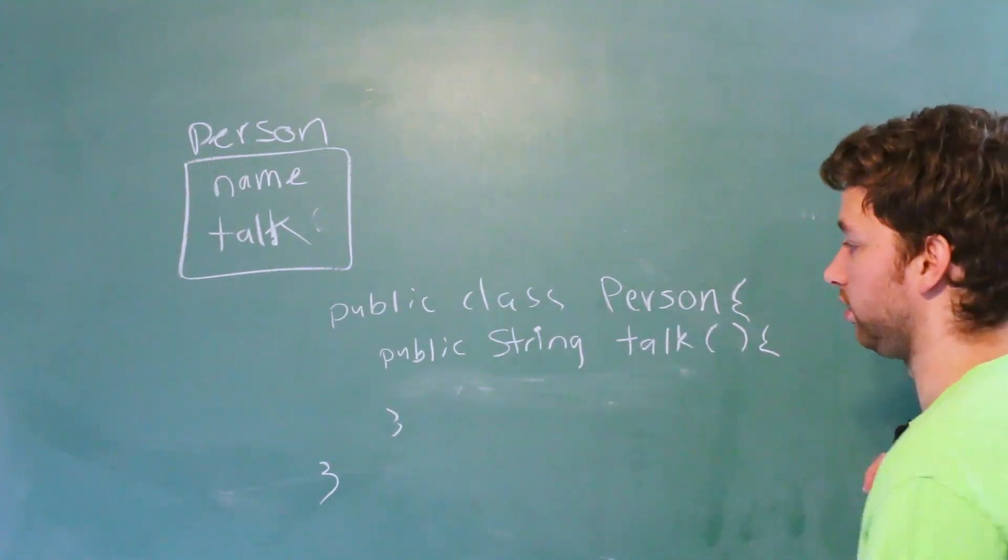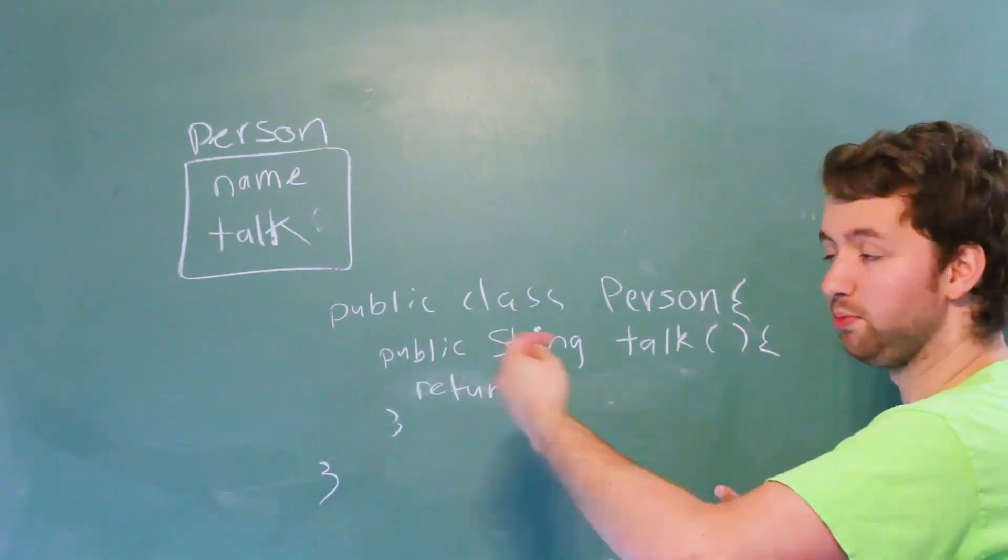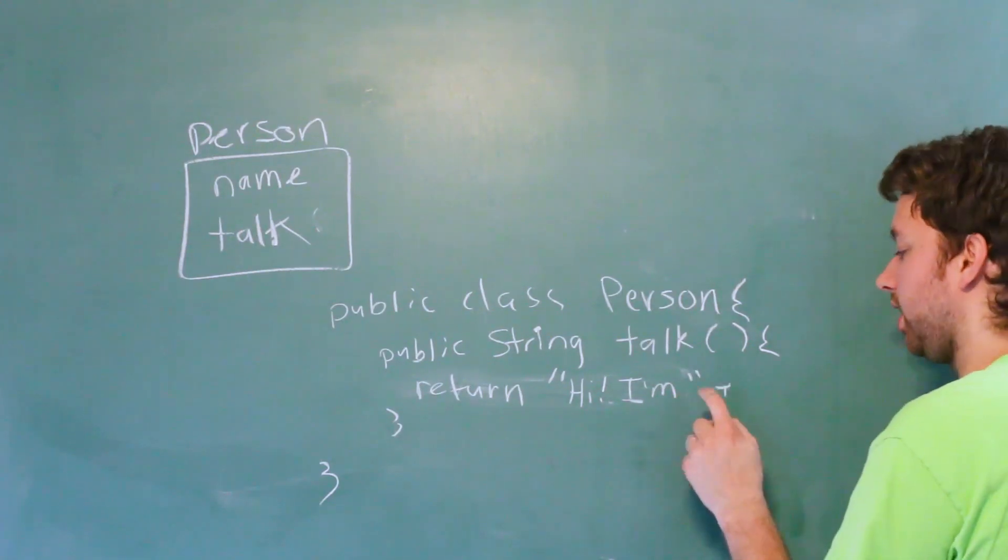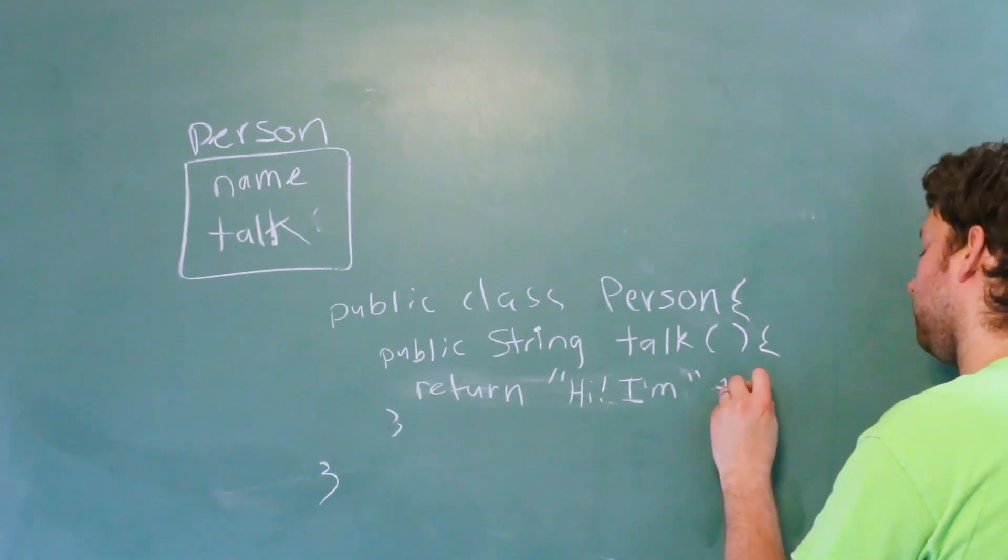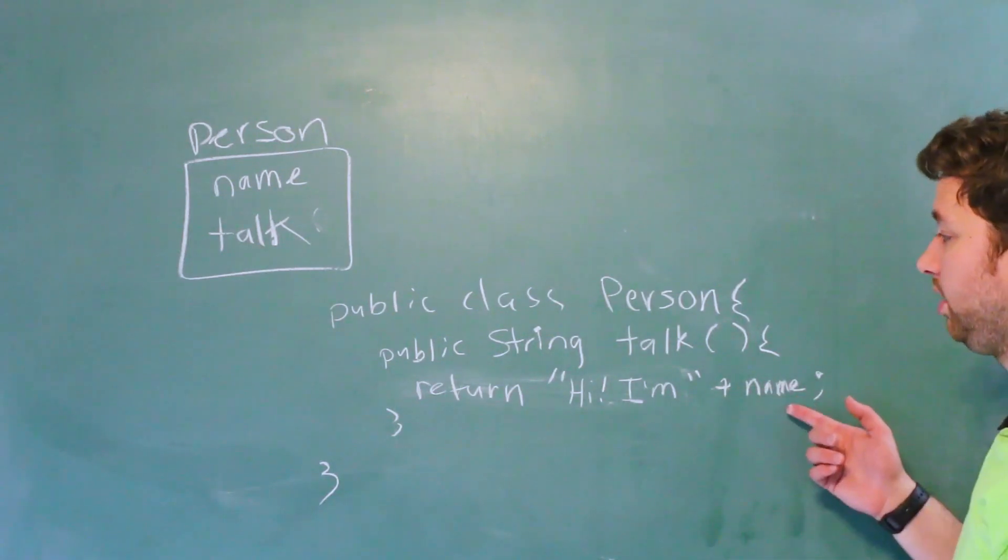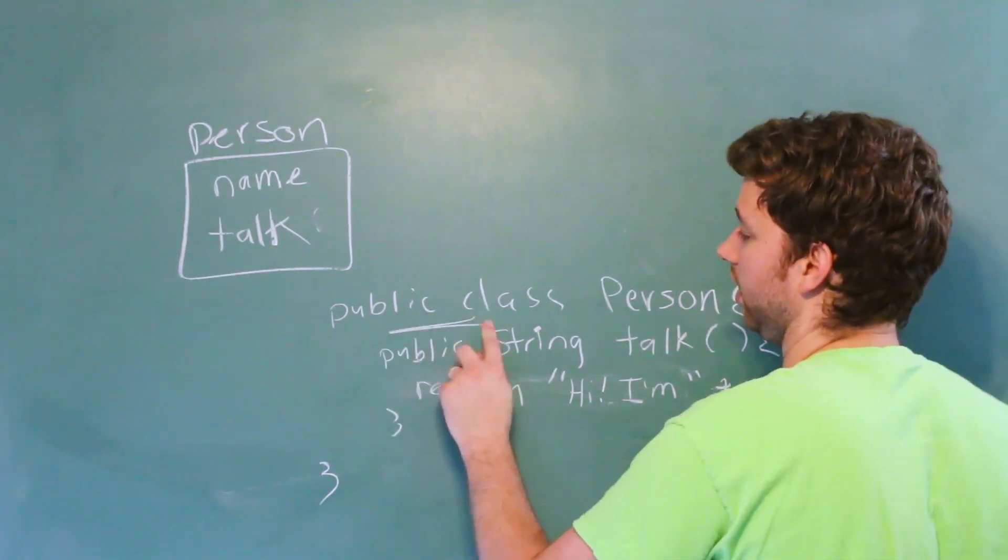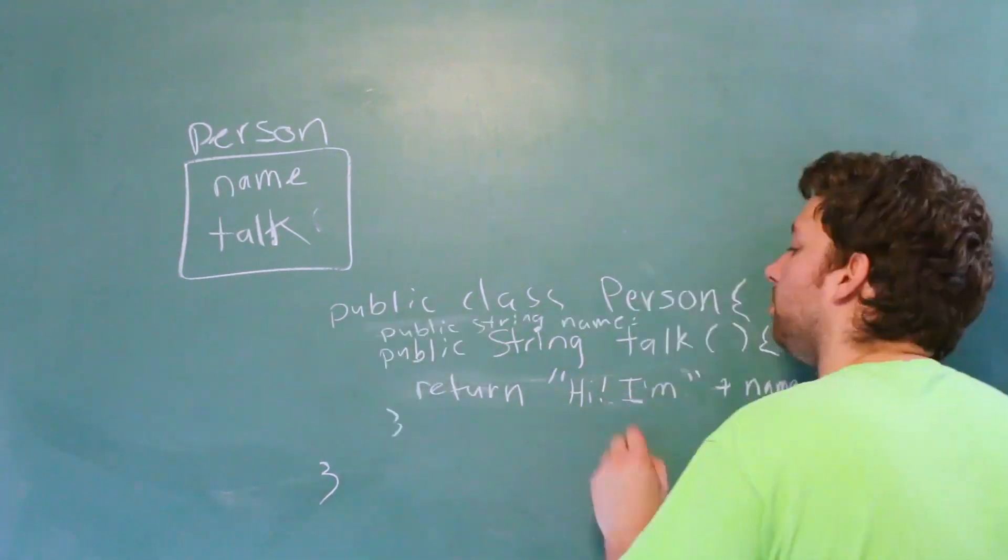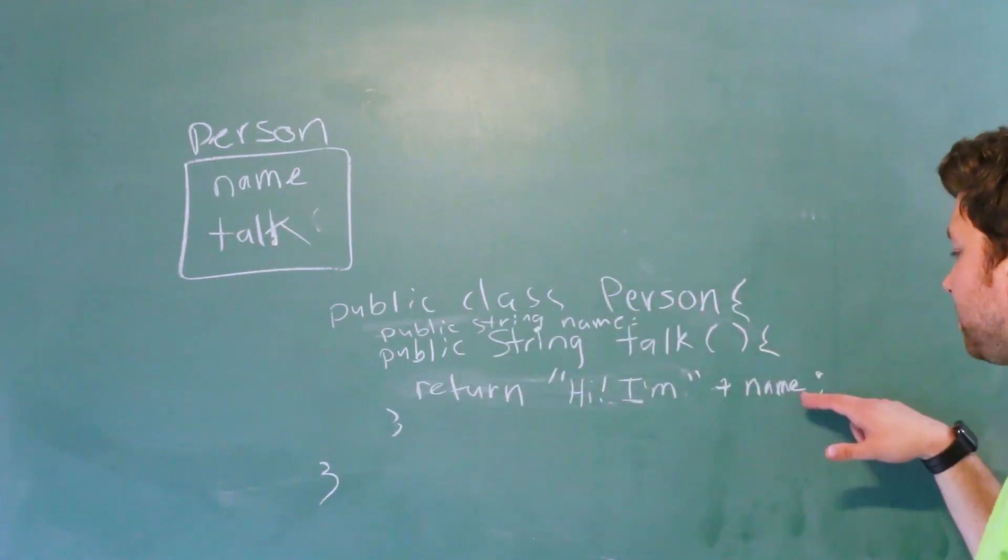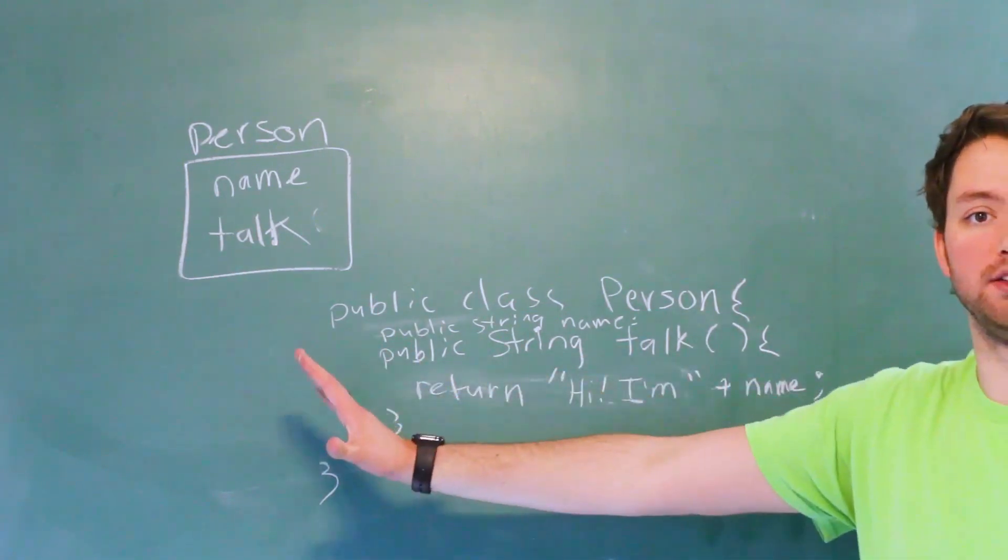So this might look like this. We can say return to basically give that string as an output. So we can say hi, I'm, then we can end the string with a space there and say plus name. And this name here is going to come from that field. So that would be defined probably right here. I'll just do a real small public string name. That's really small, but that would basically return when we call this method. So this is how we would define something like this.